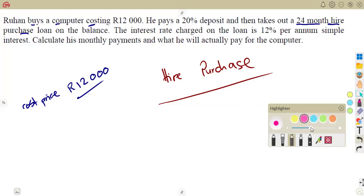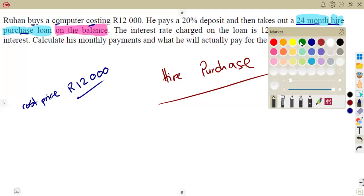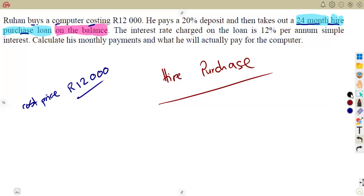He then takes out a 24-month hire purchase loan on the balance. Note where the loan is taken — it is taken on the balance. The balance is what remains after you pay the deposit.